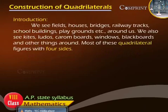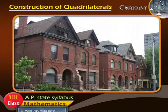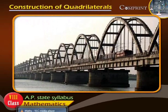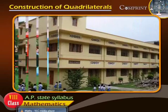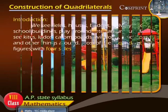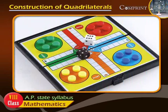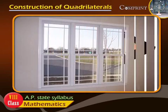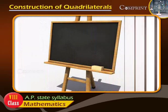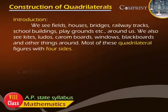We see fields, houses, bridges, railway tracks, school buildings, playgrounds, and more around us. We also see kites, lodos, carom boards, windows, blackboards and other things around. Most of these are quadrilateral figures with four sides.